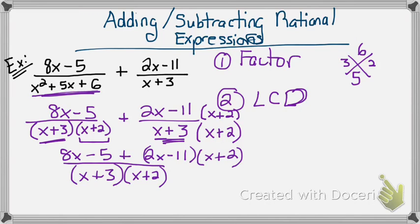So over here, I'm going to go ahead and actually multiply this. And when I do that, I'm going to go to the next page. I will get 2x squared plus 4x minus 11x minus 22. And I still have the 8x minus 5 in front. And I'm just working the numerator for right now.